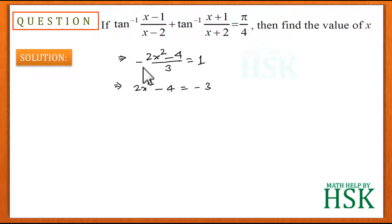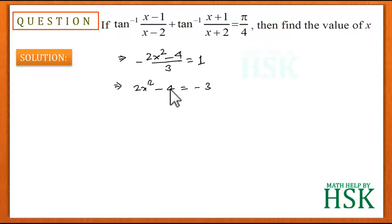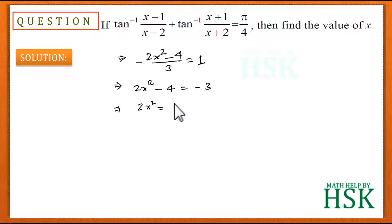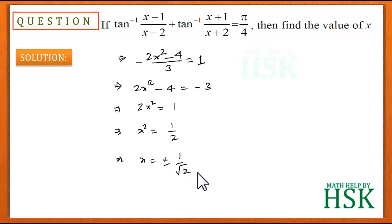Taking -3 to the other side: 2x²-4 = -3. So 2x² = 4-3 = 1, giving x² = 1/2, or x = ±1/√2. This is the required answer.